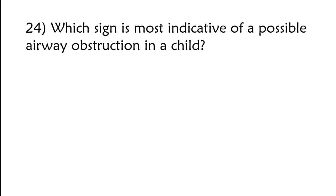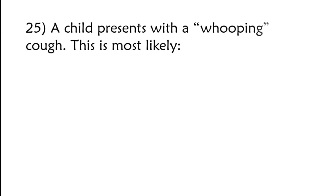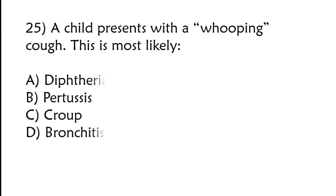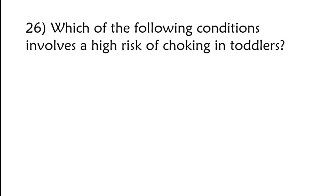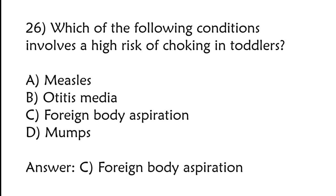Which sign is most indicative of a possible airway obstruction in a child? Drooling, nasal congestion, irritability, dry cough. Correct answer is option A, drooling. A child presents with a whooping cough. This is most likely diphtheria, pertussis, croup, bronchitis. Correct answer is option B, pertussis. Which of the following conditions involves a high risk of choking in toddlers? Measles, otitis media, foreign body aspiration, mumps. Correct answer is option C, foreign body aspiration.